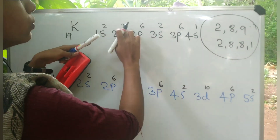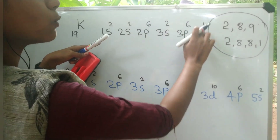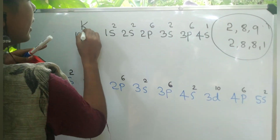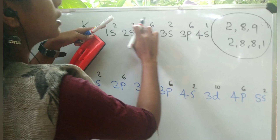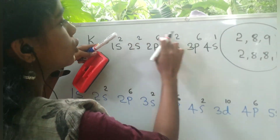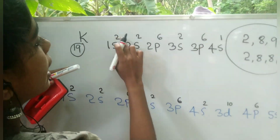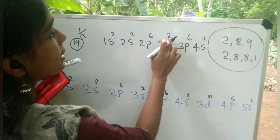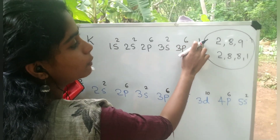The electronic configuration written out is: 1s2, 2s2, 2p6, 3s2, 3p6, 4s1. There are 19 electrons total. The electron counts per shell work out as follows: 2, 8, 8, 1 — giving us the shell configuration.